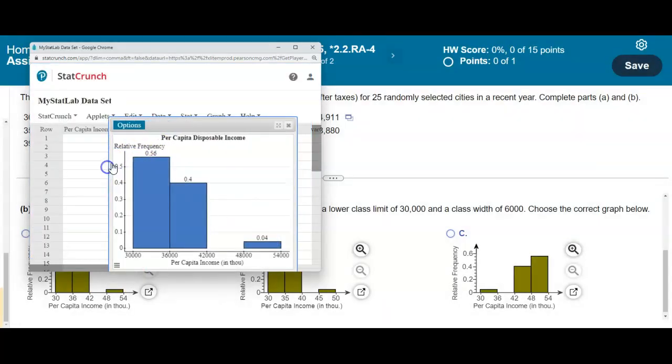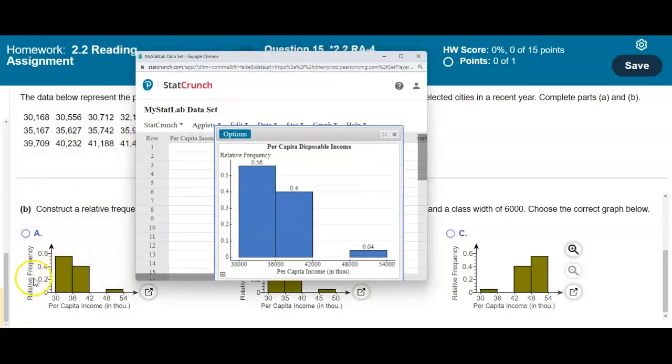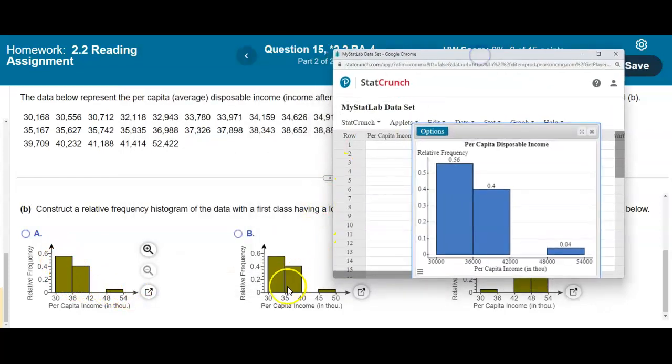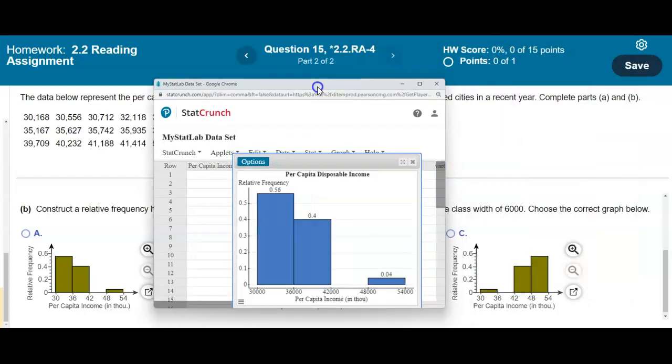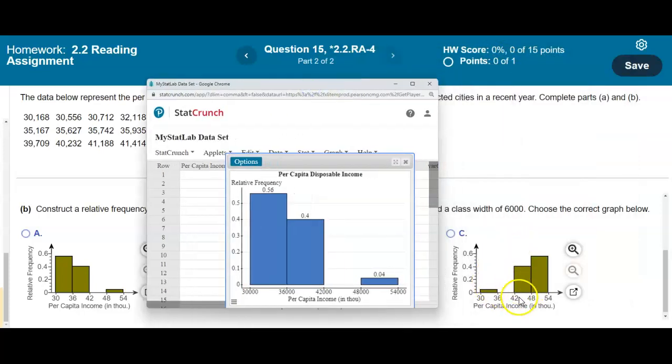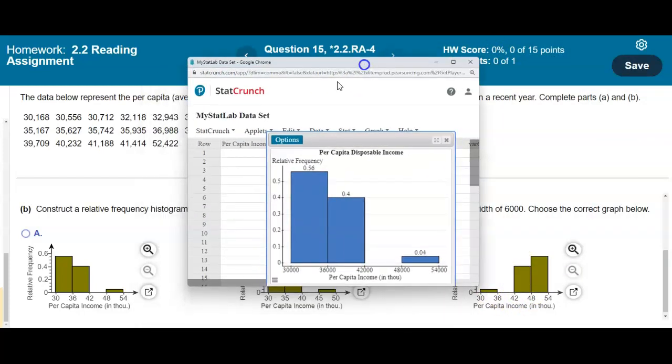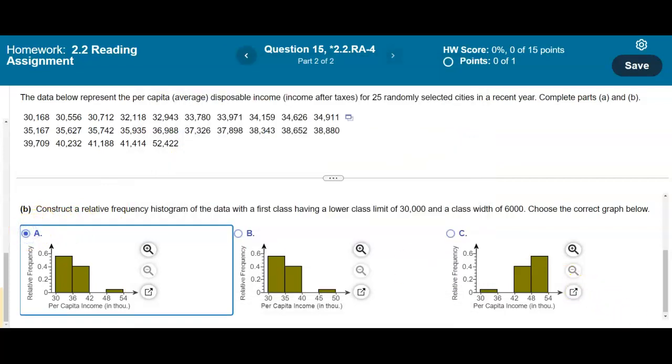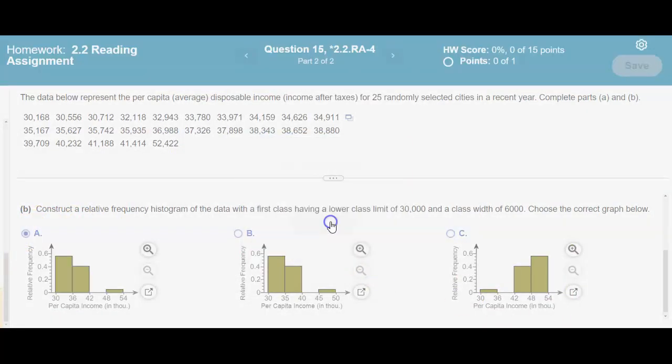Now, so if you look at our options, we're looking for the relative frequency. So so far it looks like A might be our choice. If we look at B, it would not be, even though it looks quite similar, but you can see that the class width is 5,000, not 6,000. And then if we look at C, it does not look like this option. So therefore, we're going to select A, and that is our answer.